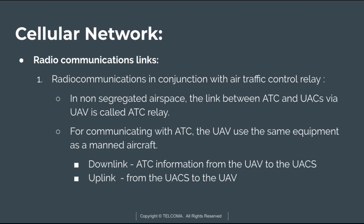Starting with radio communication in conjunction with air traffic control relay. In non-segregated airspace — airspace that is not divided — the link between ATC (air traffic control) and UACs through the UAV or drone is called ATC relay. It is used to relay ATC and air-to-air communication received and transmitted by the UAV. For communicating with ATC, the UAV uses the same equipment as the main aircraft, using downlink and uplink. Downlink sends ATC information from UAV to UACs; uplink shares ATC information from UACs to the UAV.